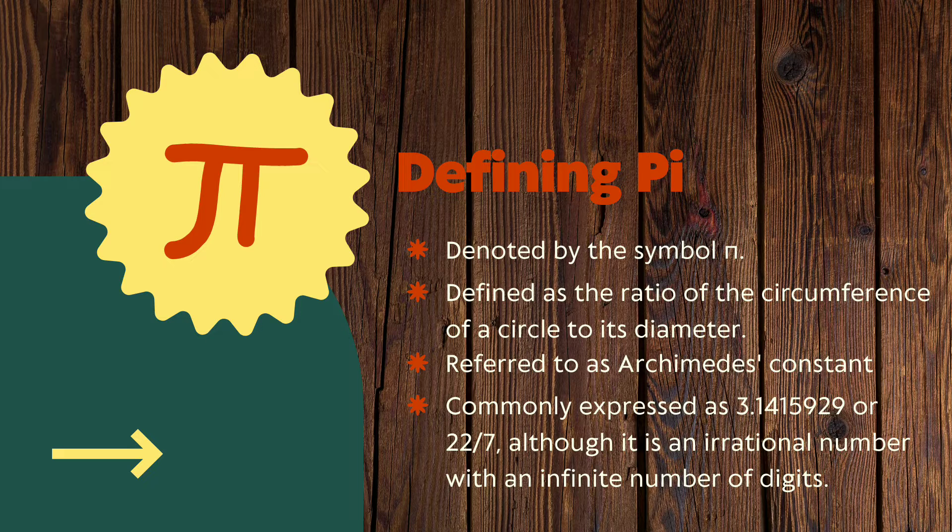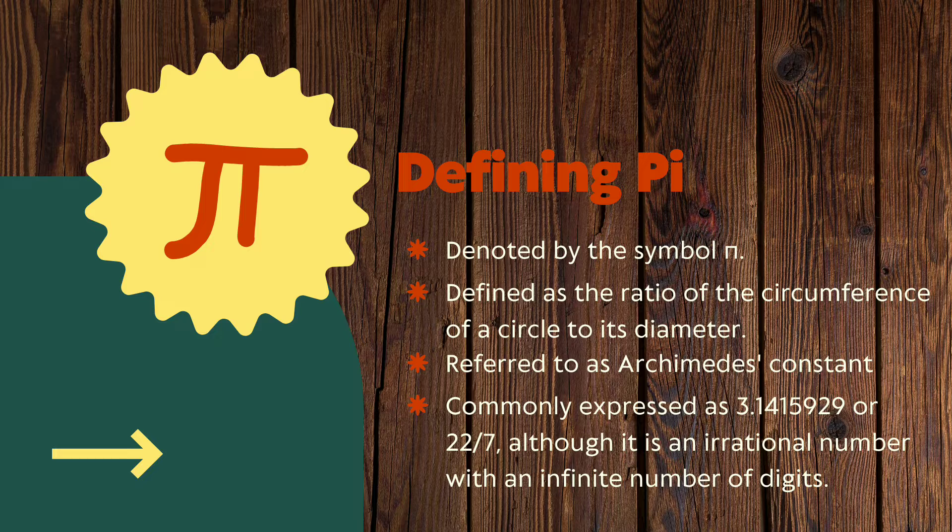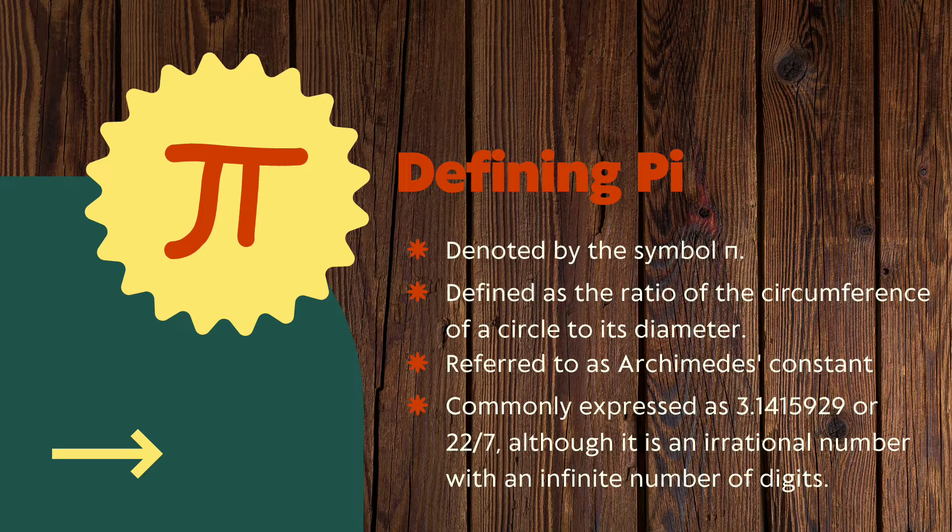It is defined as the ratio of the circumference of a circle to its diameter. It is also referred to as Archimedes' constant. It is commonly expressed as 3.1415929 or 22 by 7, although it is an irrational number with an infinite number of digits.